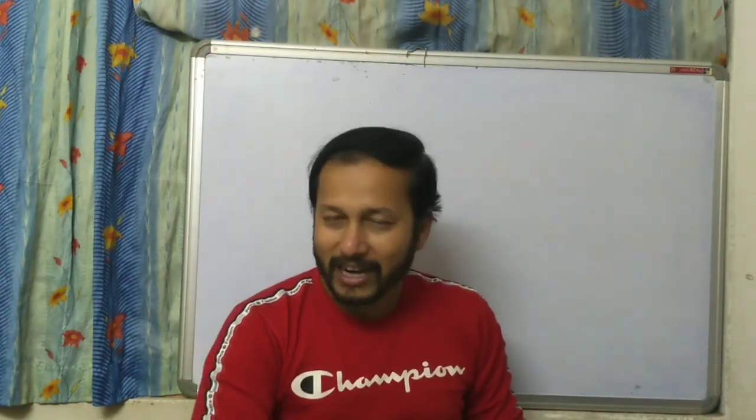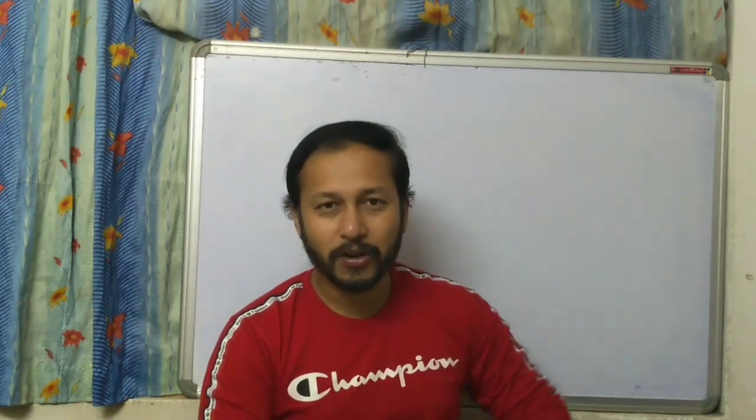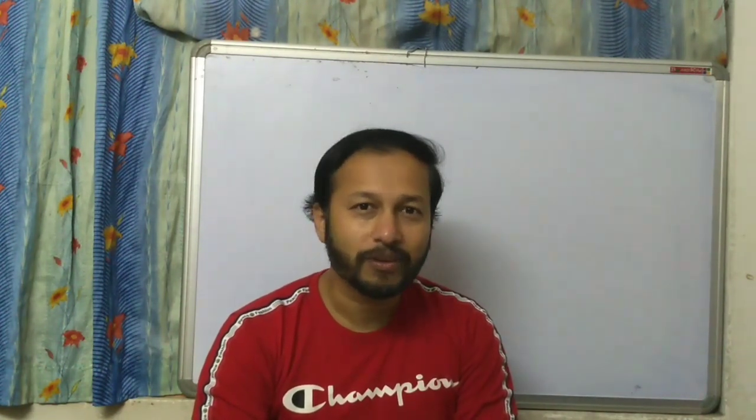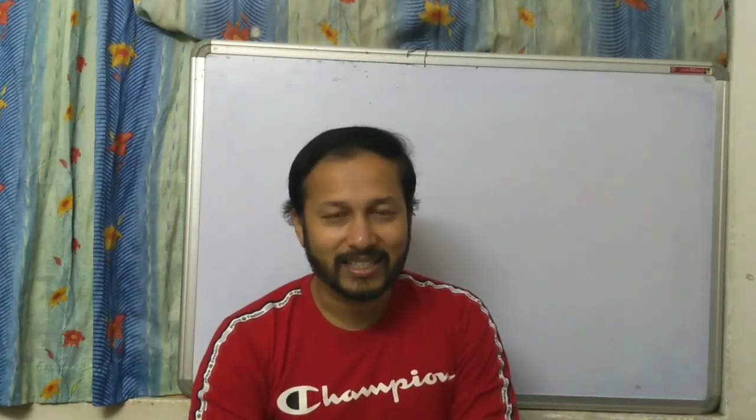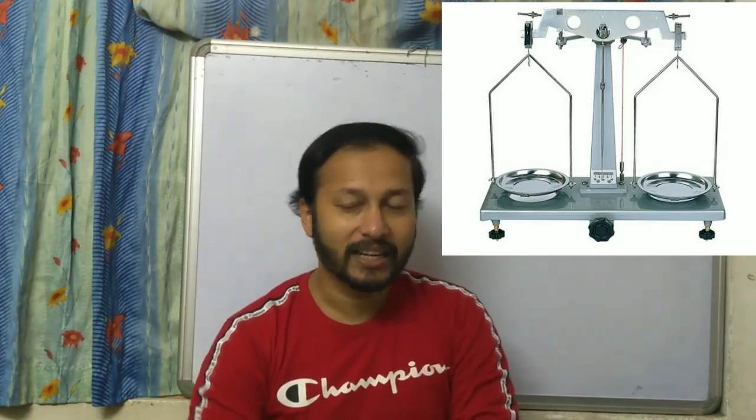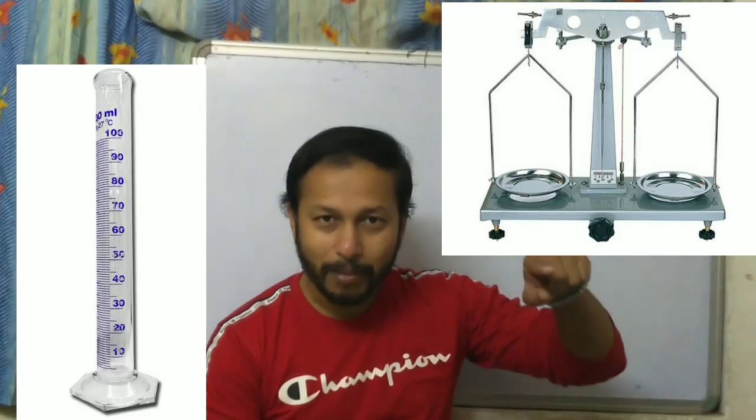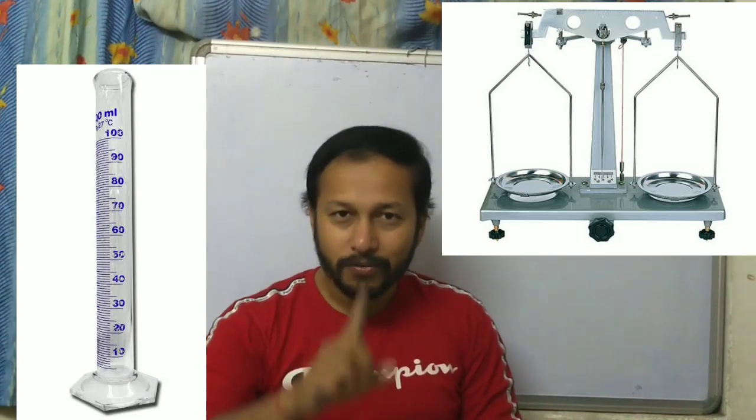To find the density of a solid, we need to find two things: first, the mass of that solid, and then the volume. To find the mass we require a device called a physical balance — you can see the photo of the physical balance on your screen. To find the volume we require a special type of cylinder called a measuring cylinder, which is also displayed on screen.